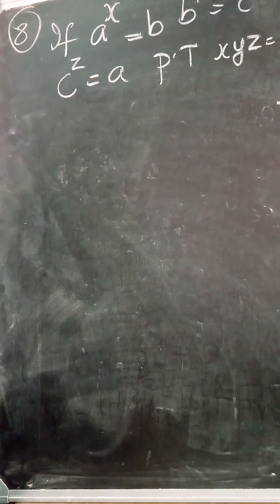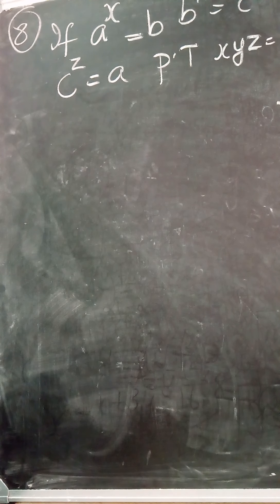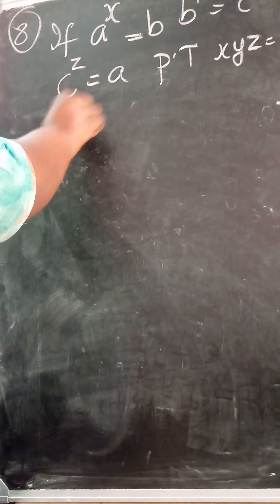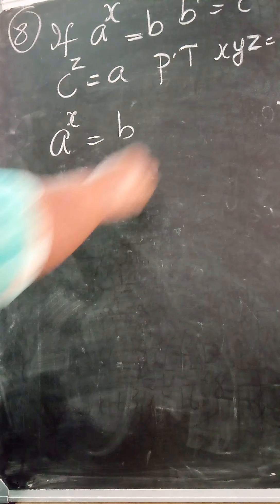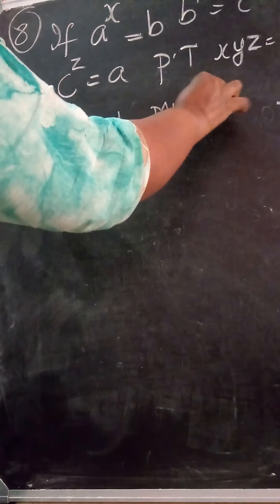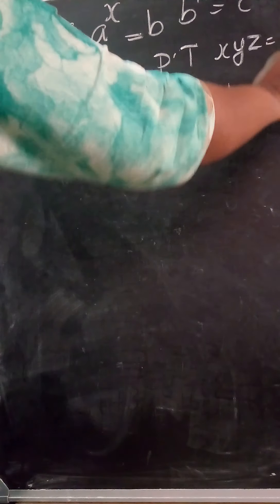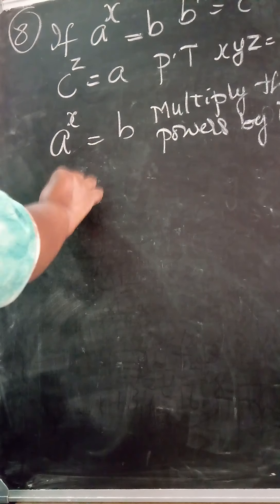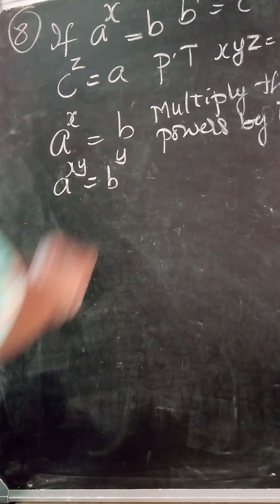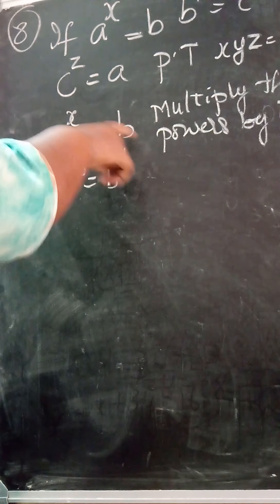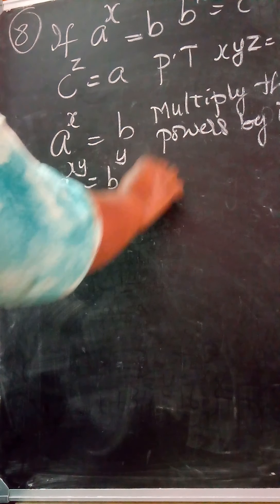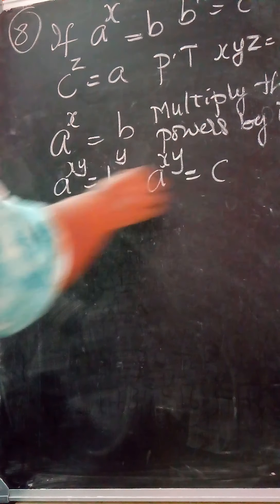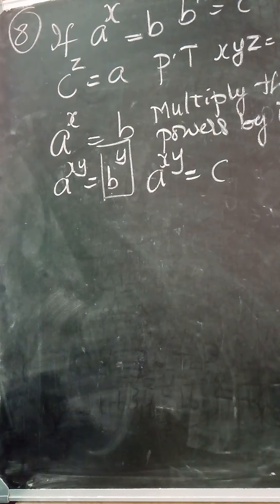I had sent a video of this. Some of you said you didn't understand, so I am doing it again. Taking a^x = b, I am multiplying the power by y. So a raised to the power of xy is equal to b raised to the power of y. But b raised to the power of y is equal to c, so a raised to the power of xy is equal to c.